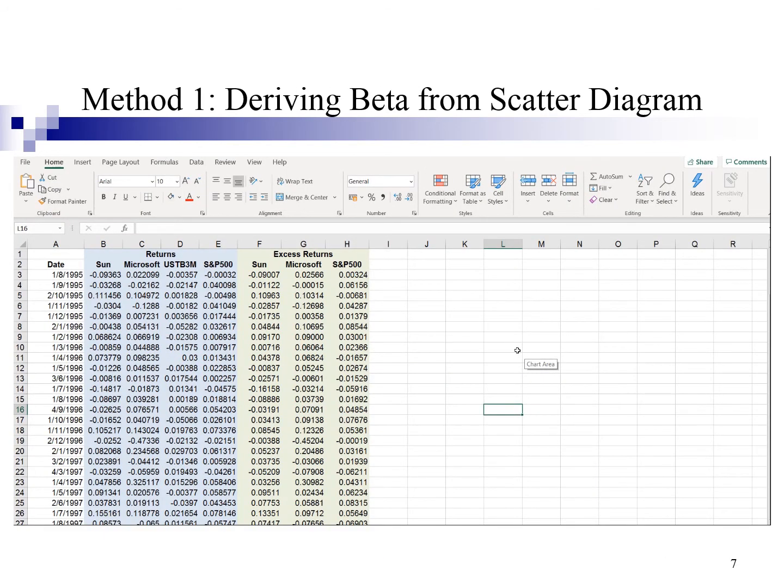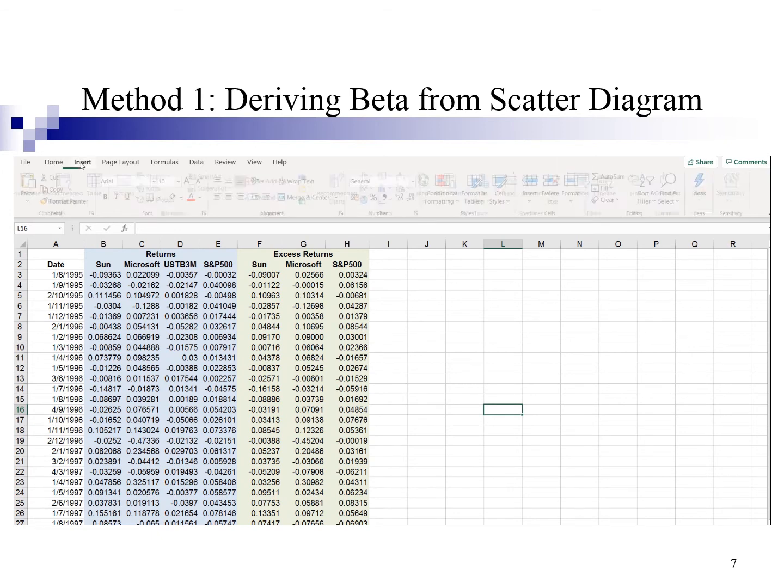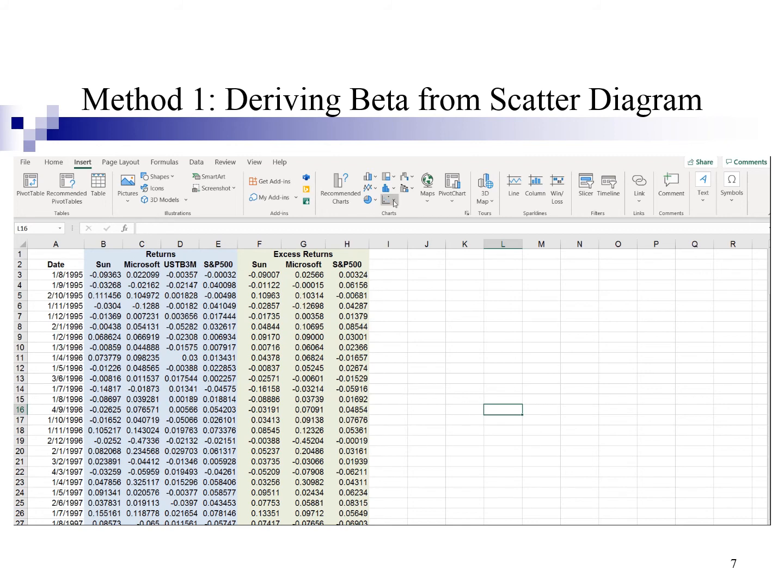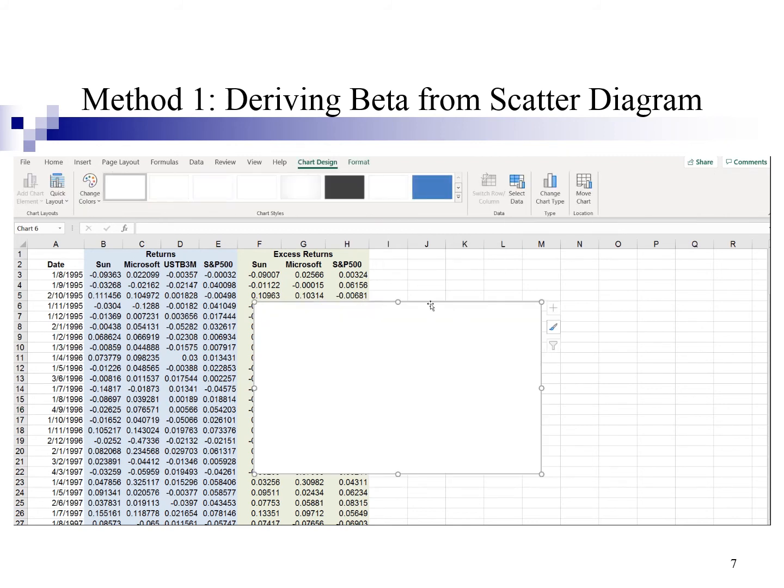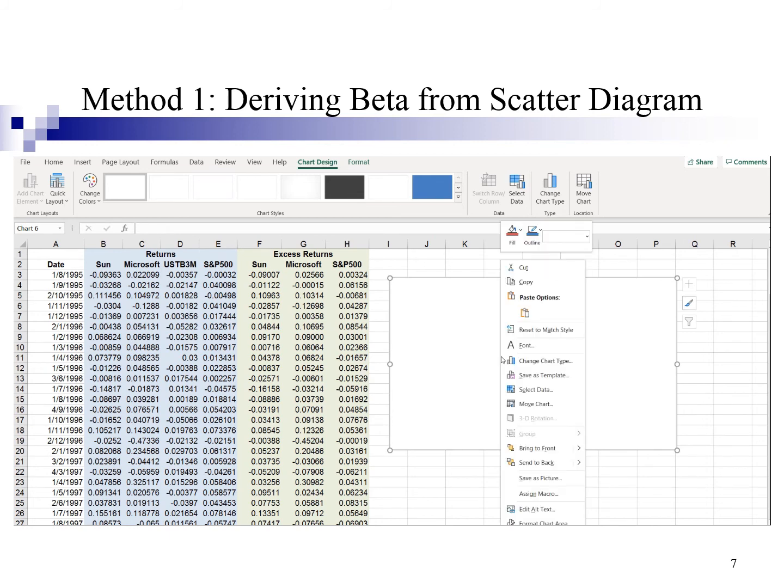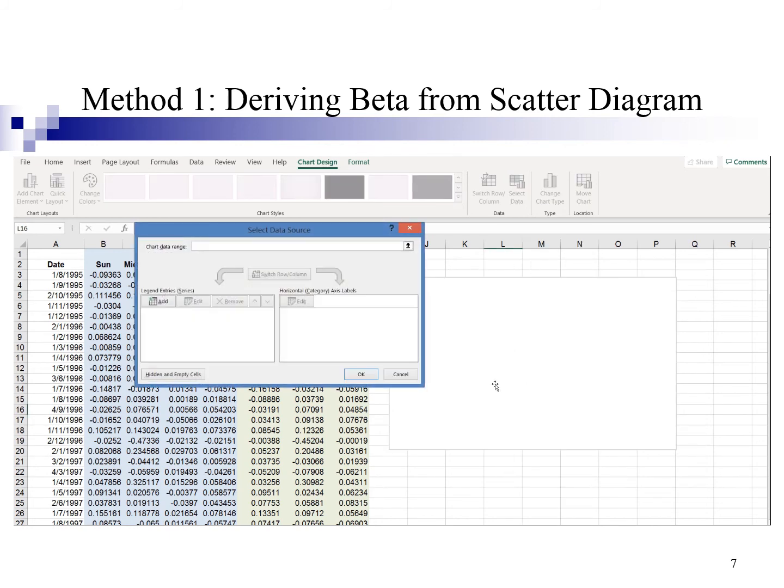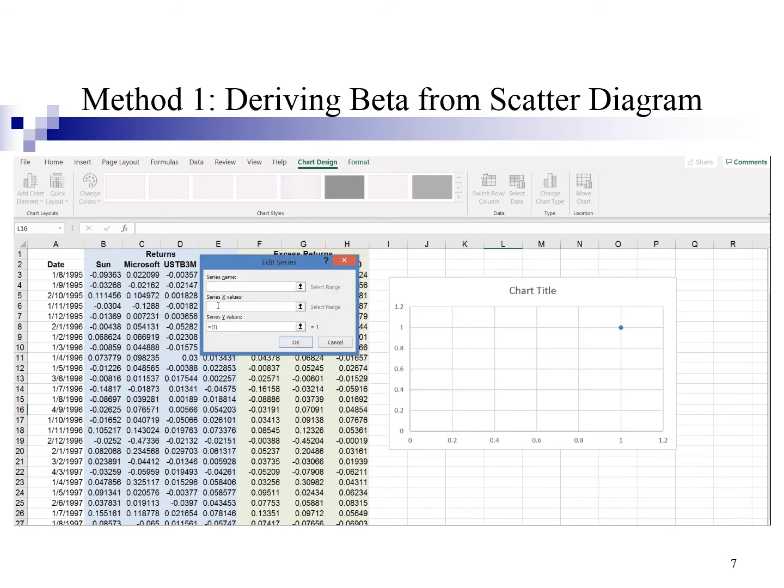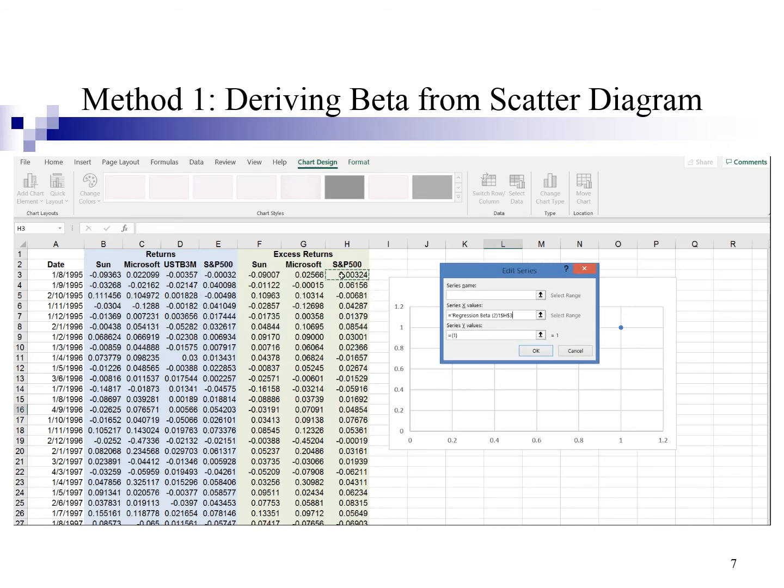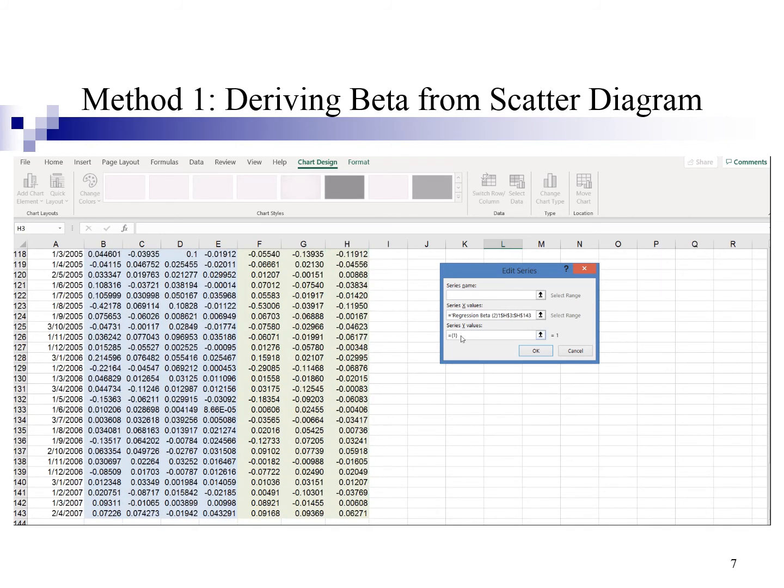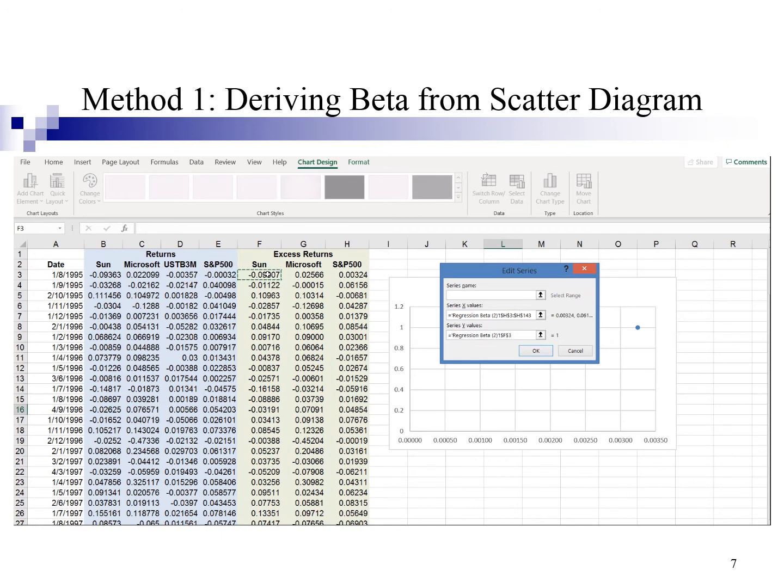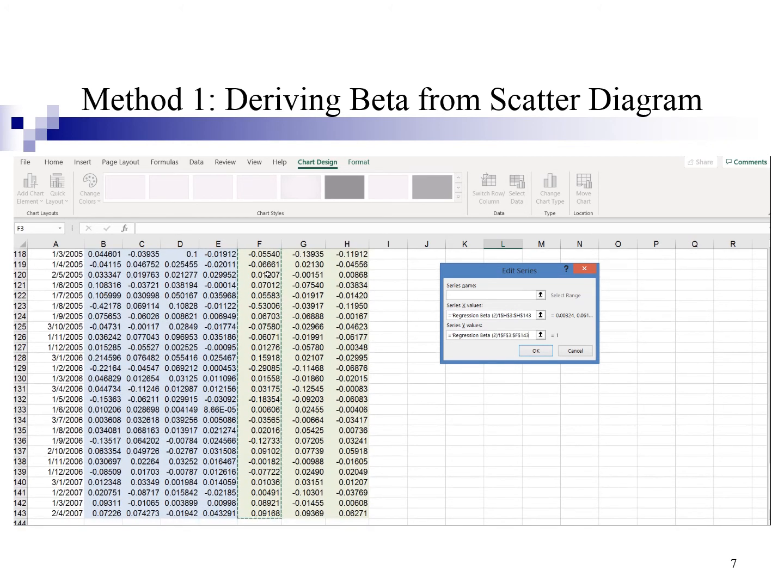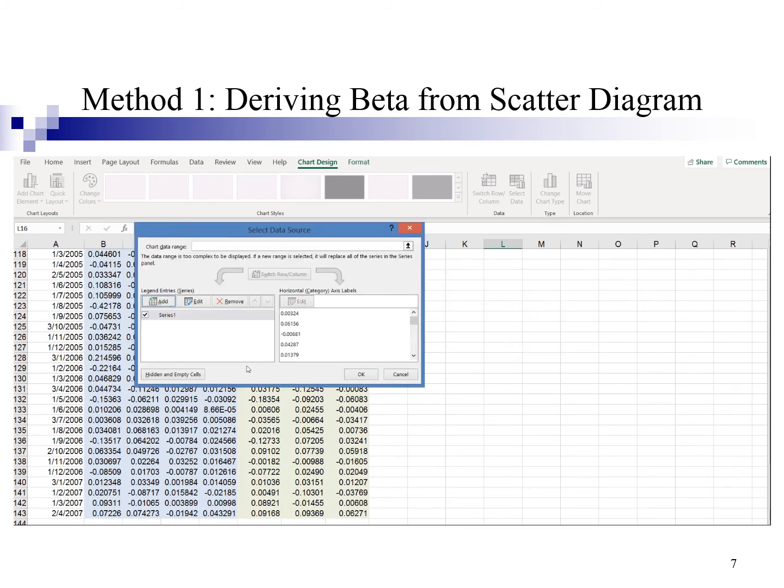Now, I'm going to show you how to calculate beta. I'm going to insert a scatter diagram. Here, select this one. Alright, then I point here and right click. Go for select data. Alright, add and here the series X value represent S&P 500 excess return. I'm going to press ctrl shift arrow down. The Y value represent the Sun excess return. Here, I'm going to press ctrl shift arrow down to highlight the data. Click OK. OK again.